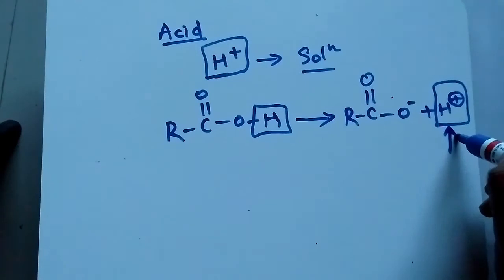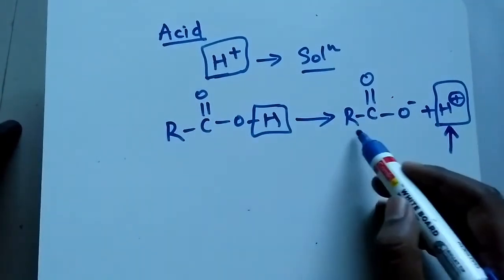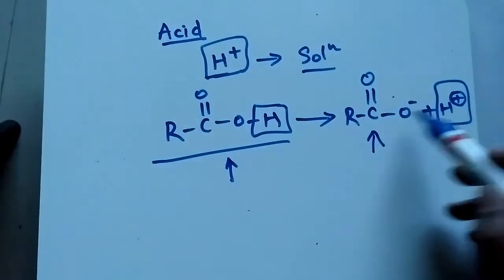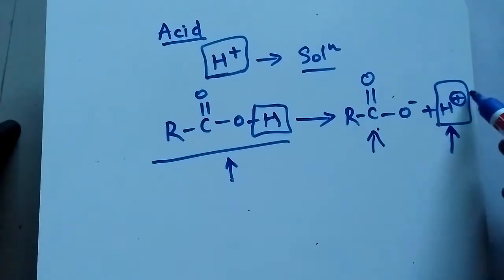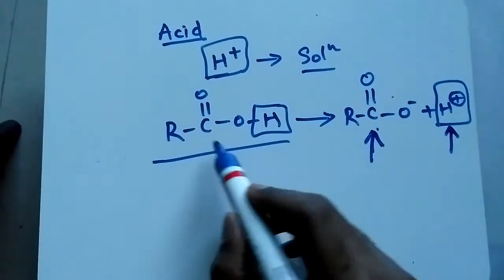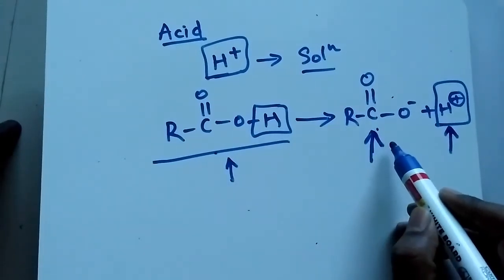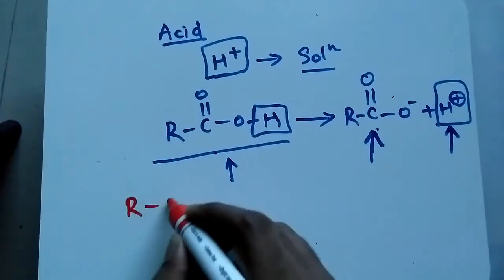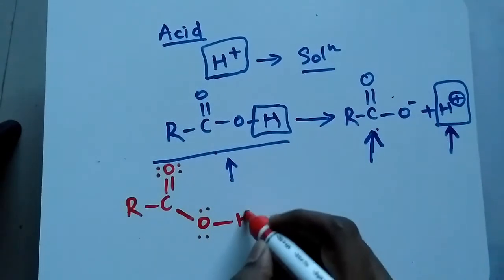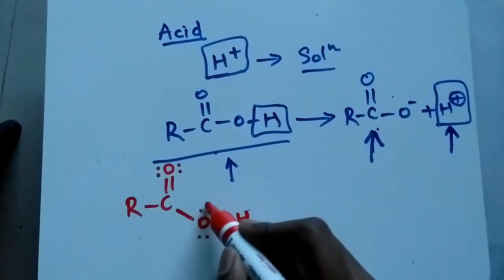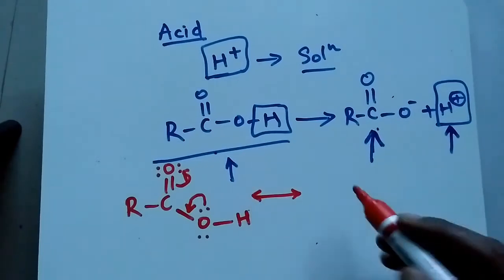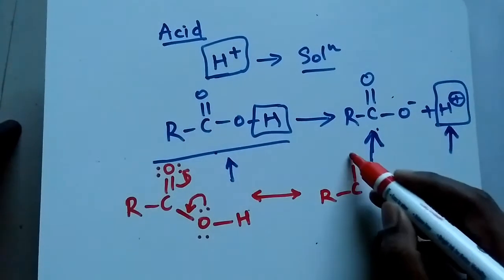We have to check which is more stable — the carboxylate ion, or the original structure. If the carboxylate ion is stable, it will be produced and result in the formation of H+ ion. Now if I draw carboxylic acid again: we have a double bond oxygen with two lone pairs of electrons, and another oxygen with two lone pairs and an H. Shifting lone pairs gives a resonance structure.